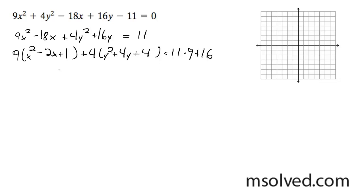And this ends up being 9(x - 1)² + 4(y + 2)² = 36. Divide by 36, we get (x - 1)² over 4 and (y + 2)² over 9 is equal to 1.